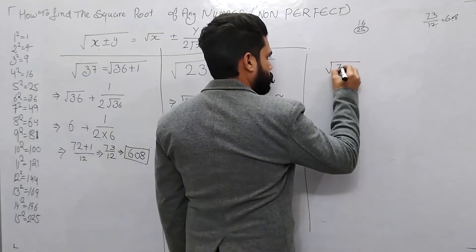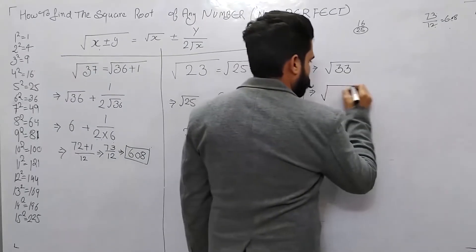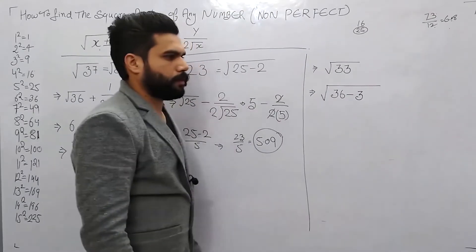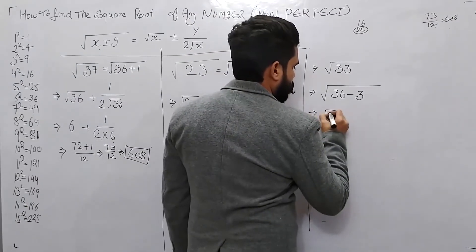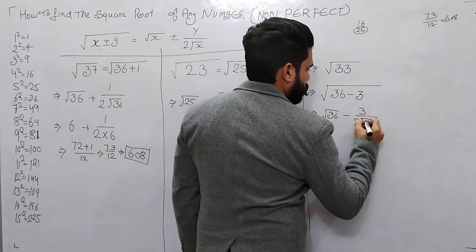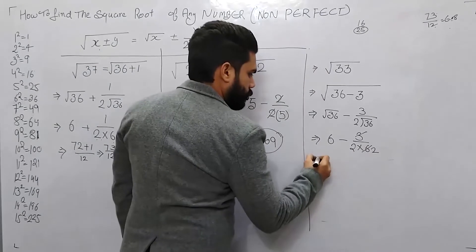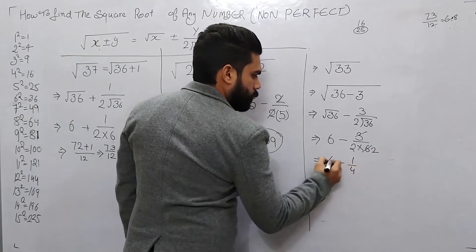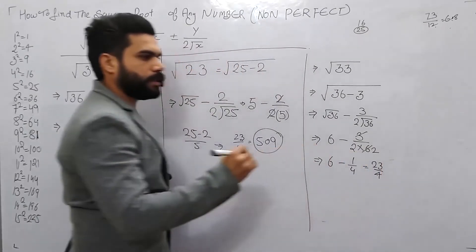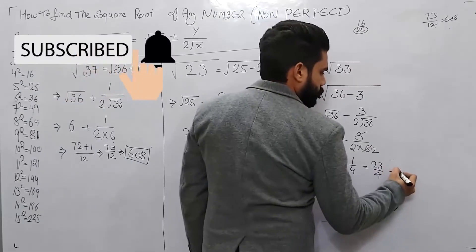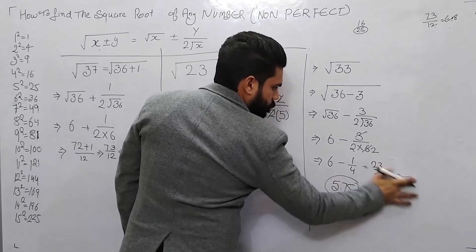Next example: √33. The closest perfect square is 36, so we write 36 minus 3. Applying the formula: root 36 minus 3 over 2 root 36. Root 36 is 6, so 2 times 6 is 12. We get 36 minus 3 over 12 — that gives 1 over 4, so 23 over 4. When I divide, the answer is 5.75.